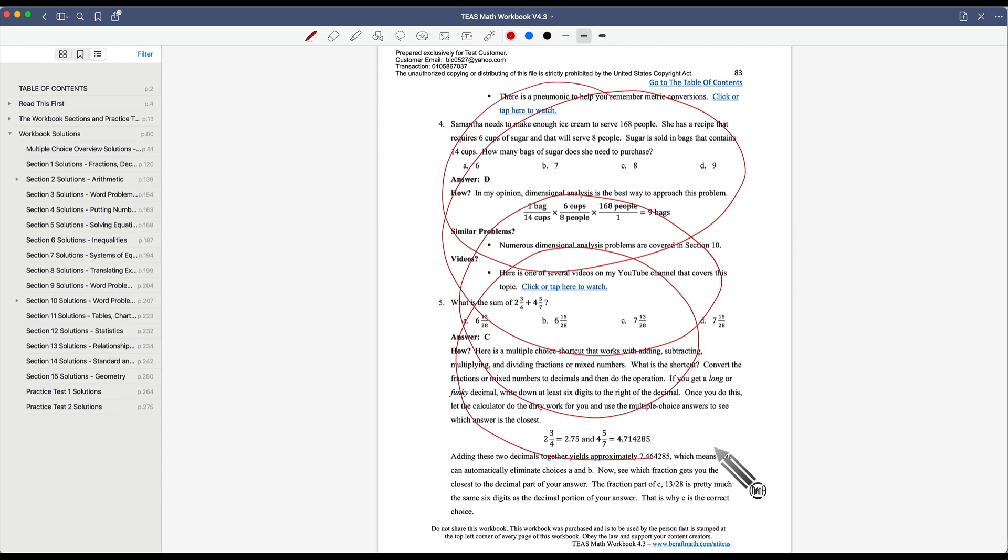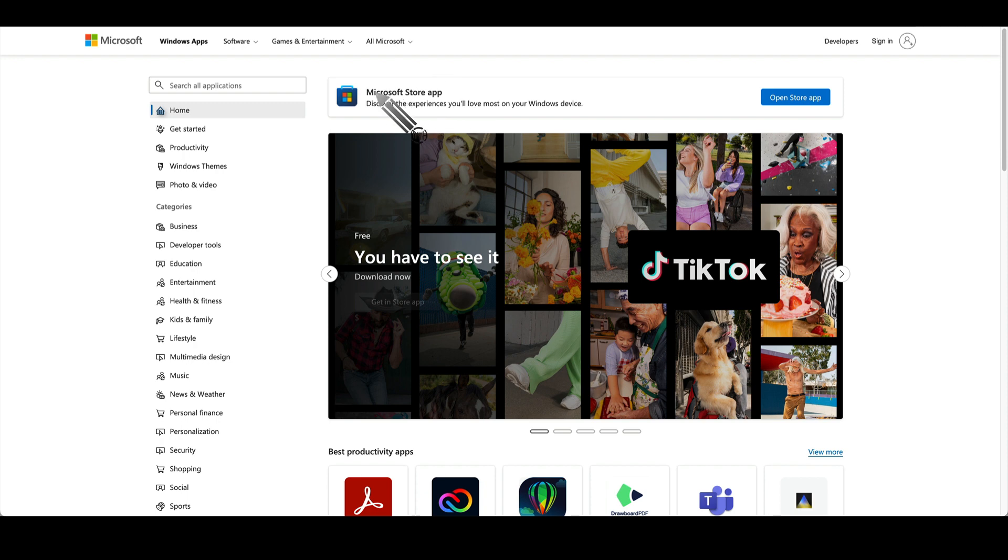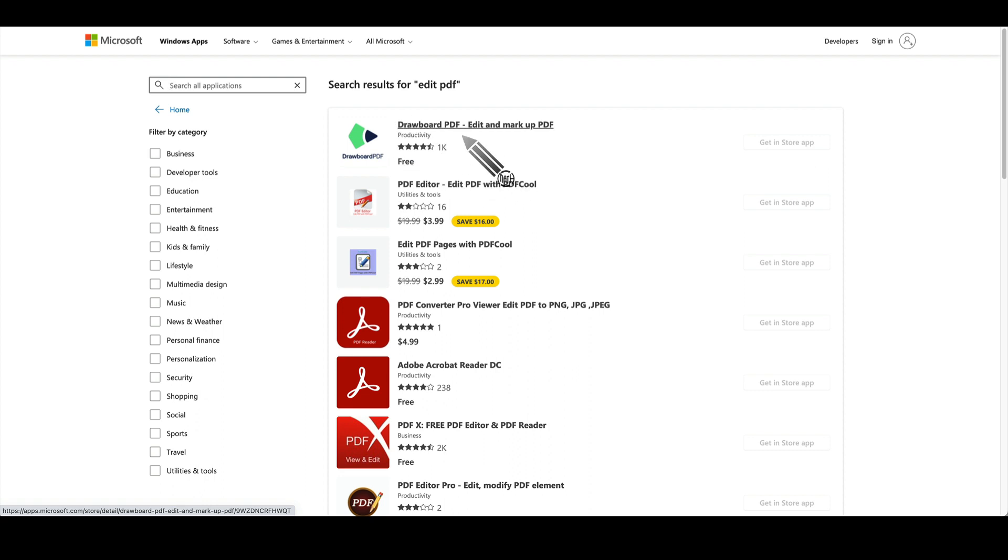Say if you have a Windows computer, you can go to the Windows Store. I guess I should have said the Microsoft Store. But inside of here, let's do Edit PDF. And perhaps this one right here might work for you. Drawboard PDF, edit and markup PDF documents. There are some other paid options. And this is for your computers with Windows.